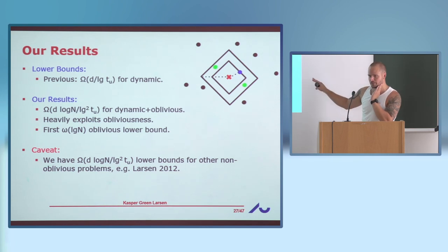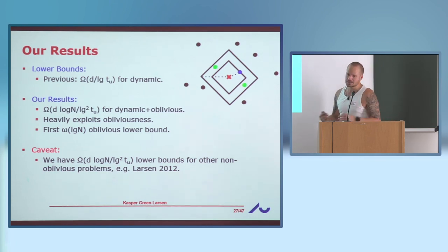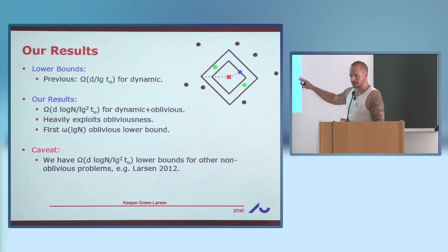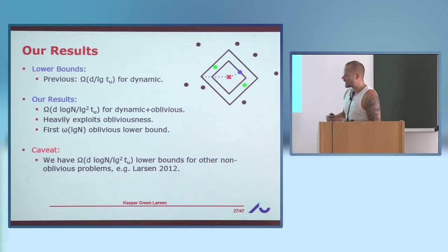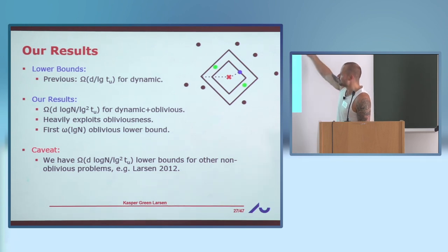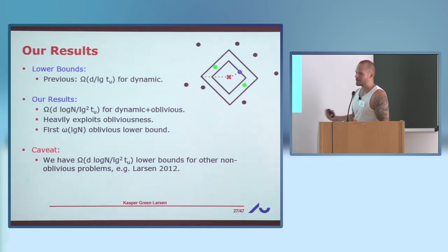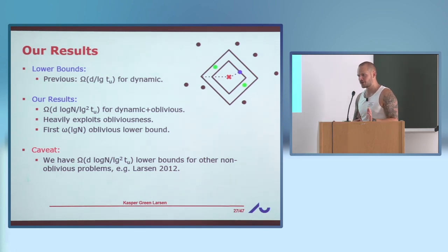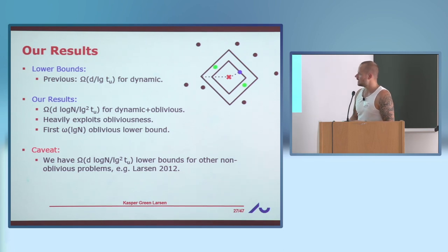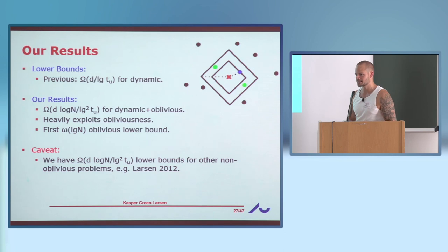One caveat about this lower bound proof is that there are other data structure problems where we can prove a similar lower bound without using obliviousness. So in some sense, if we could go even higher, it would be a new type of bound. These data structure lower bounds are pretty closely connected to lower bounds for log-depth circuits, especially in the static case, so there are some barriers to moving beyond this.